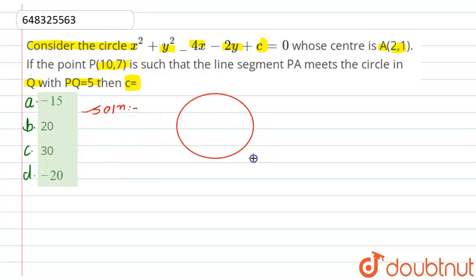Let us suppose this is the circle whose center is given here as 2,1. Let this center be A, which we have given here, that is A(2,1). Now P is a point outside the circle which cuts the circle at point Q.